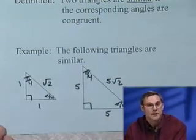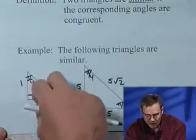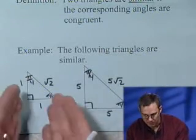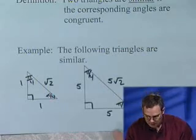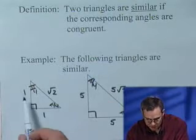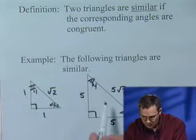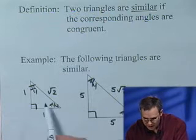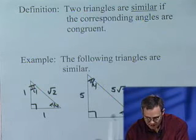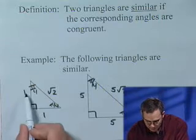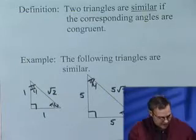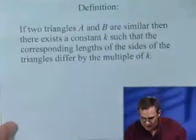When I think of similar, I just think of taking one triangle and putting it in a copy machine and blowing it up. It either gets bigger or smaller, but it's proportional to each other. Now let's look at this. Notice, remember our special right triangle, our relationship was 1, 1, √2. Take a look at this triangle. Notice it has the same relationship. This one is 5, 5, 5√2. Notice we simply can multiply 1 by 5, 1 by 5, √2 by 5 to get these sides.